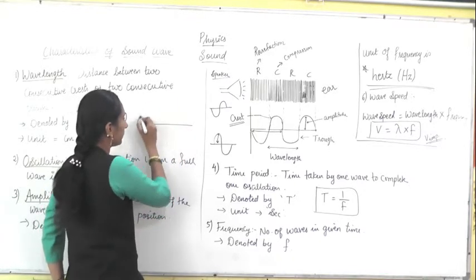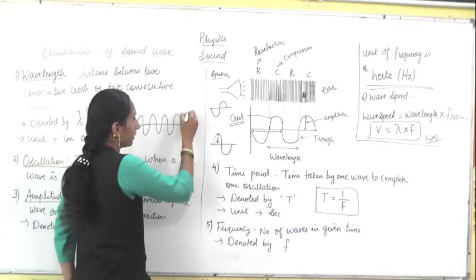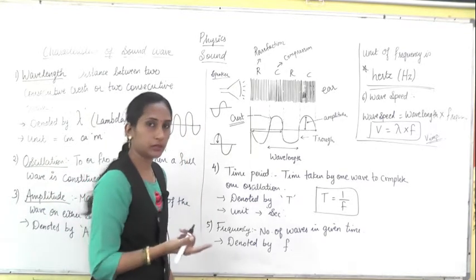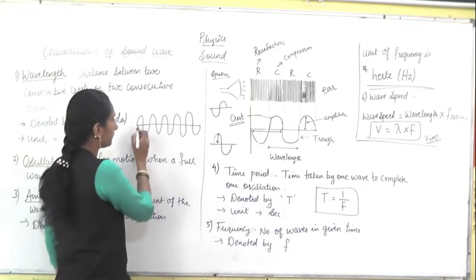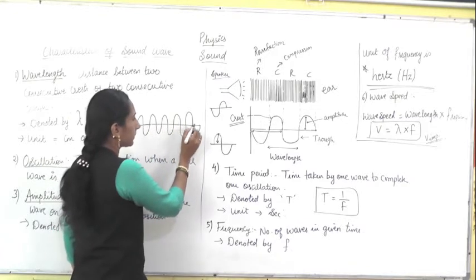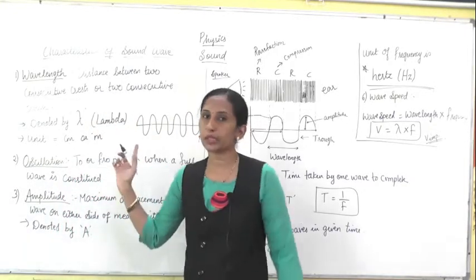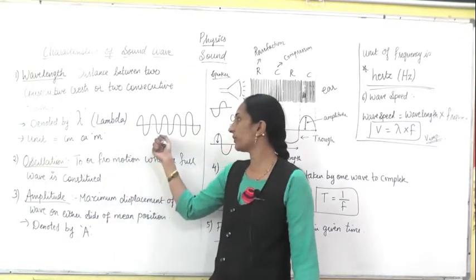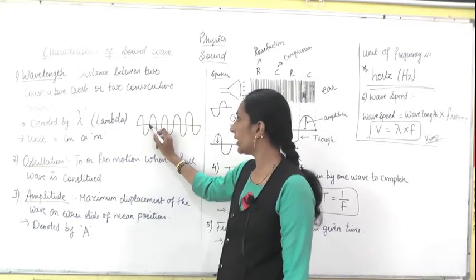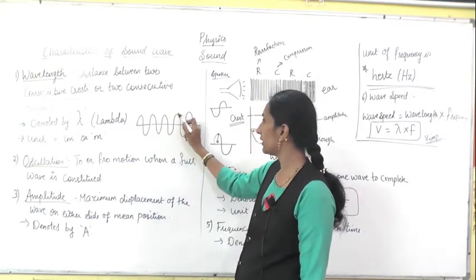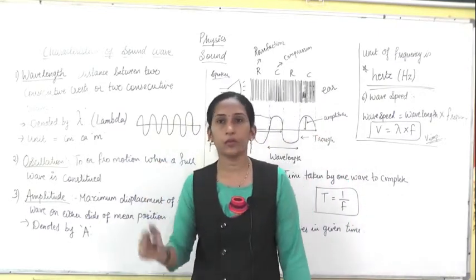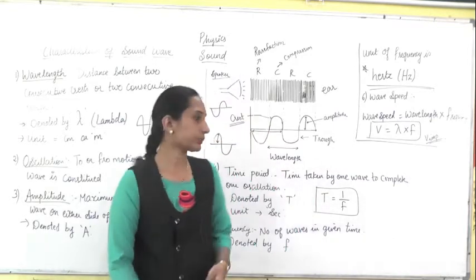Now if I draw another wave, what will be the frequency? You will find it and tell me after watching this video. Find the frequency — just count how many waves there are. If you count: one, two, three, four, five — so the frequency of that wave would be five. Send me the answer.